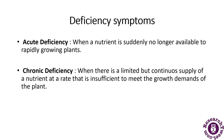Deficiency symptoms are further divided into two parts: acute deficiency and chronic deficiency. Acute deficiency is when a nutrient is suddenly no longer available to the rapidly growing plant. Chronic deficiency is when there is a limited but continuous supply of nutrients at a rate insufficient to meet the growth demands of the plant.